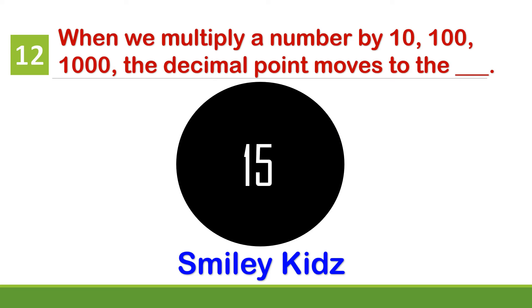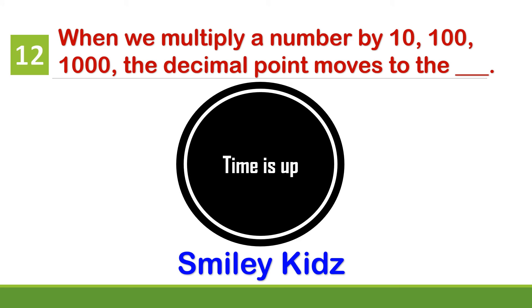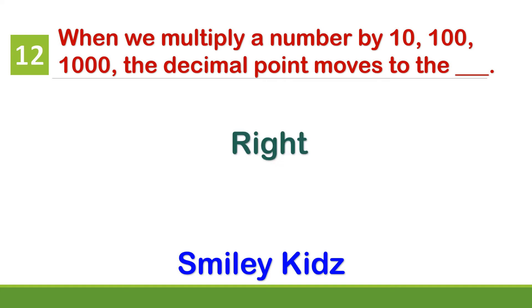Question number 12. When we multiply a number with ten, hundred, or thousand, the decimal point moves to the? Your time starts now. Your time is up. The correct answer is right. When we multiply a number by ten, hundred, and thousand, the decimal point moves to the right.